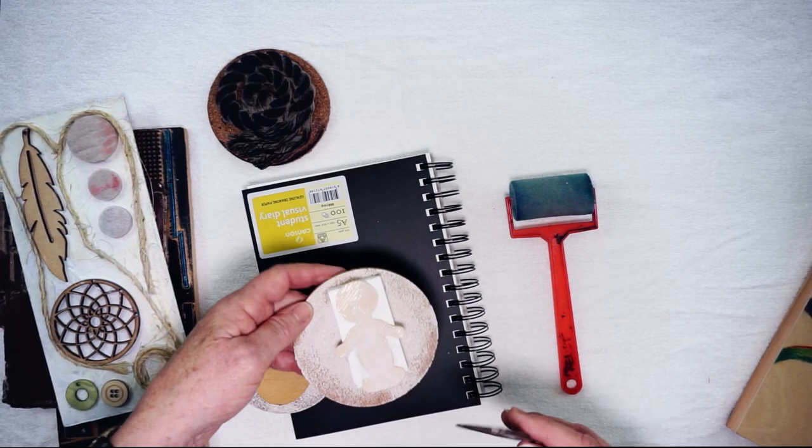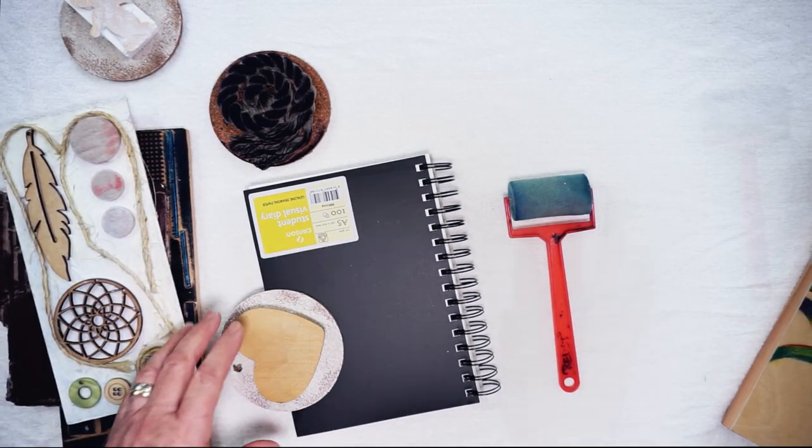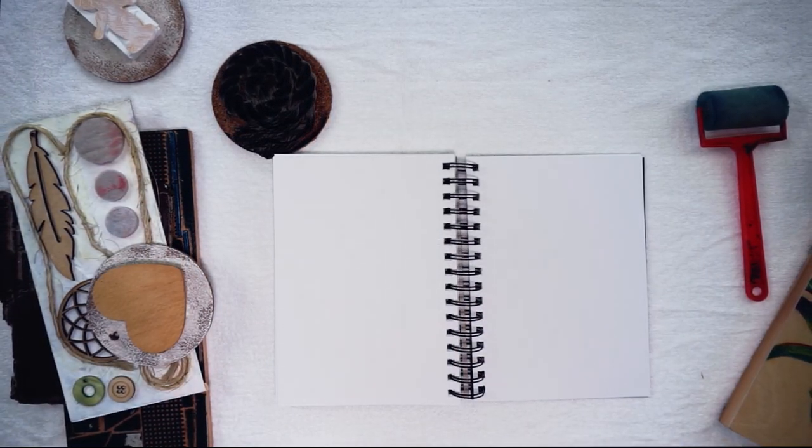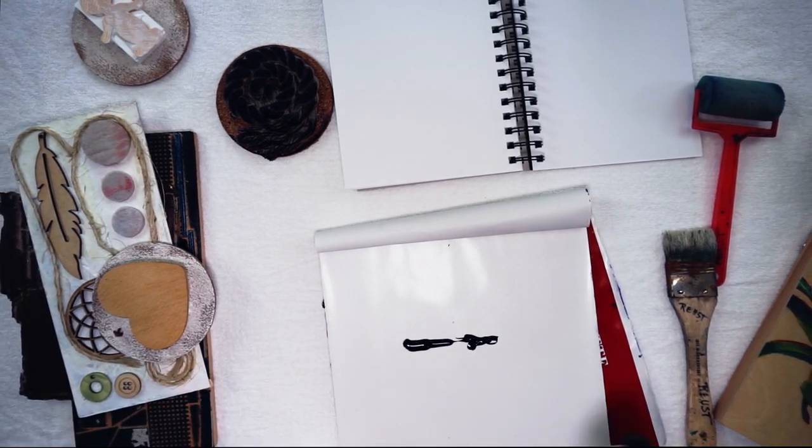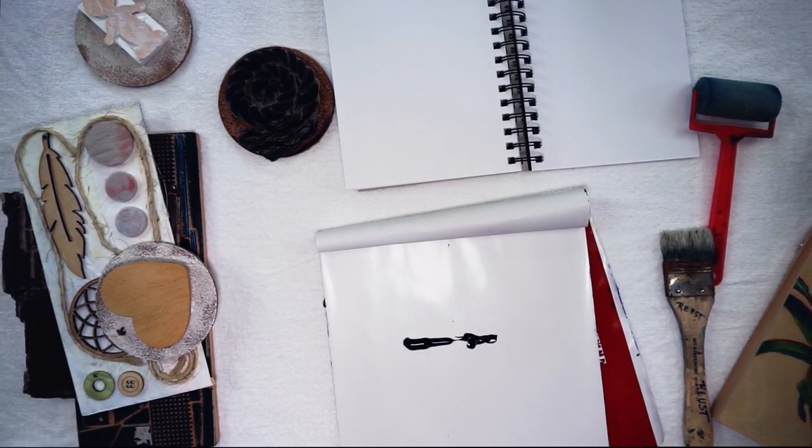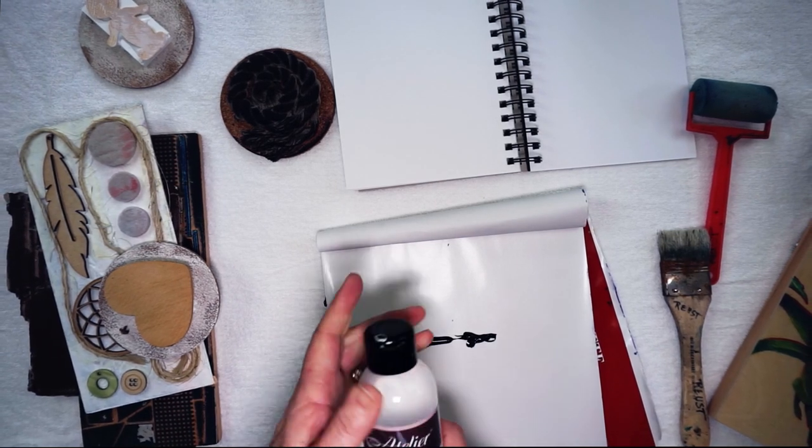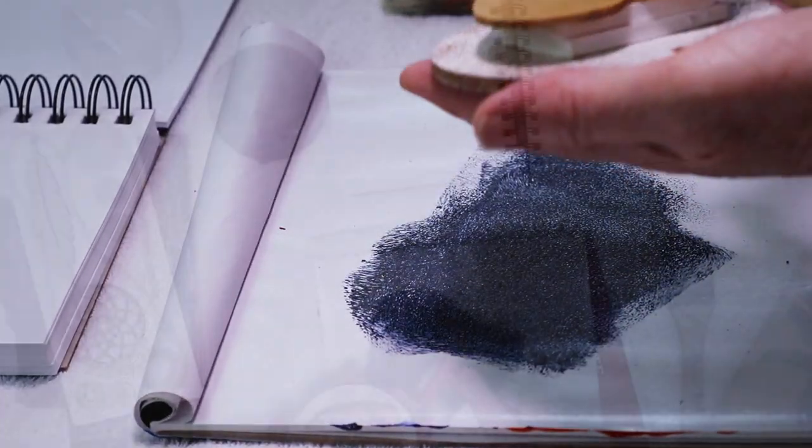I'll just do a really quick demo of what they look like. So we're just going to mix up some Payne's Gray, and because we're going to be using a sponge roller for this little print, we're just going to add some medium to the paint, roll it out, put it on the stamp.